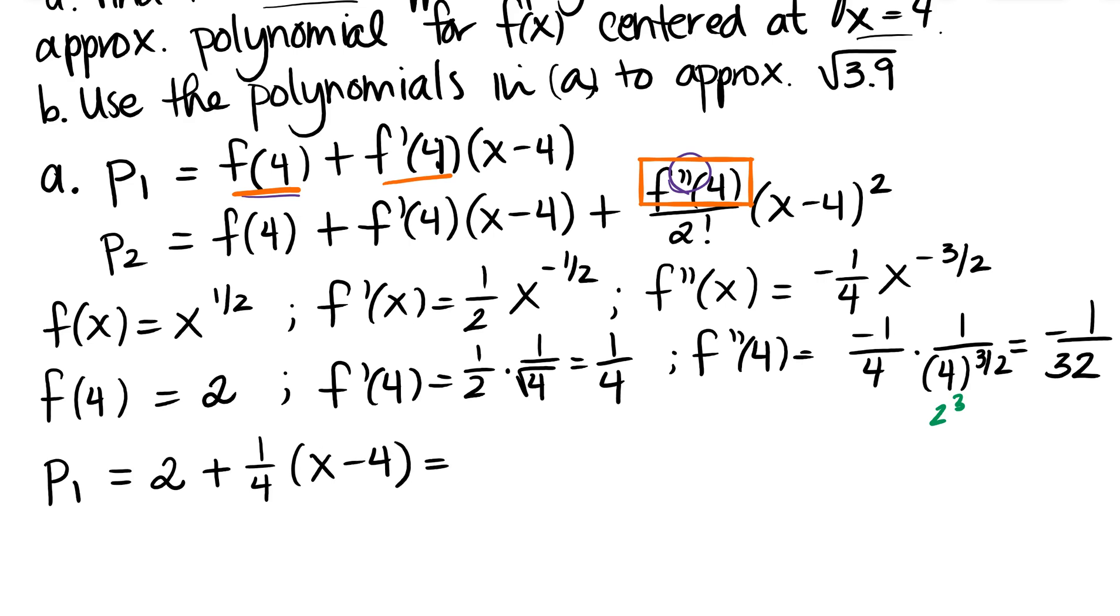And if I simplify this a little bit, I could take the 1 fourth through, I'll get 1 fourth x. 1 fourth times negative 4 is negative 1. And then if I add that to 2, I get plus 1. Especially because I know I'm not going to simplify it like that with the quadratic, but I know I'm going to be plugging it in.